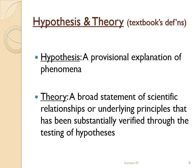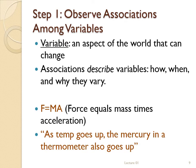To see why, we need to look at the scientific method in a slightly different, more technical way. In the first step, the scientist observes the world and notices certain changes — these are variables, things that are able to vary. When you observe variables changing with one another — force equals mass times acceleration, or as temperature goes up, the height of mercury in a thermometer also goes up — those are associations. Associations among variables describe the observable world, and the first step of the scientific method is to describe associations among variables: you collect data.